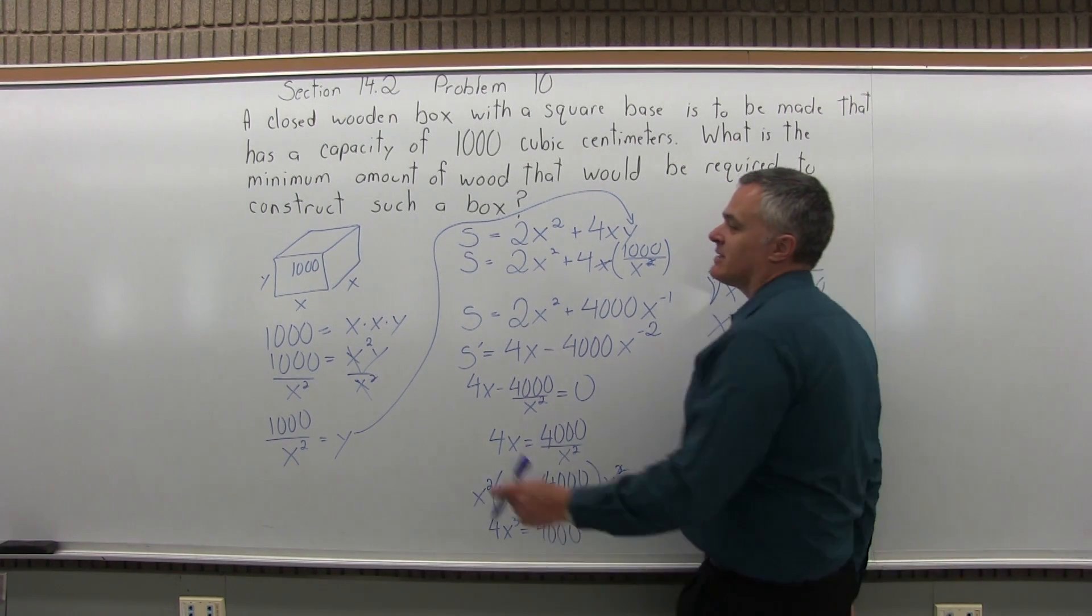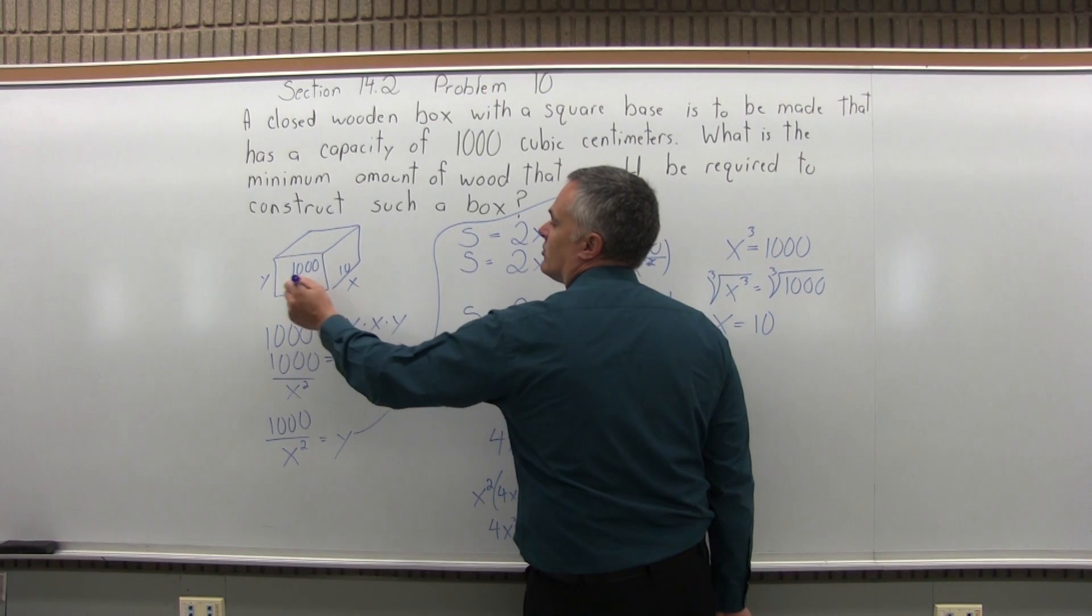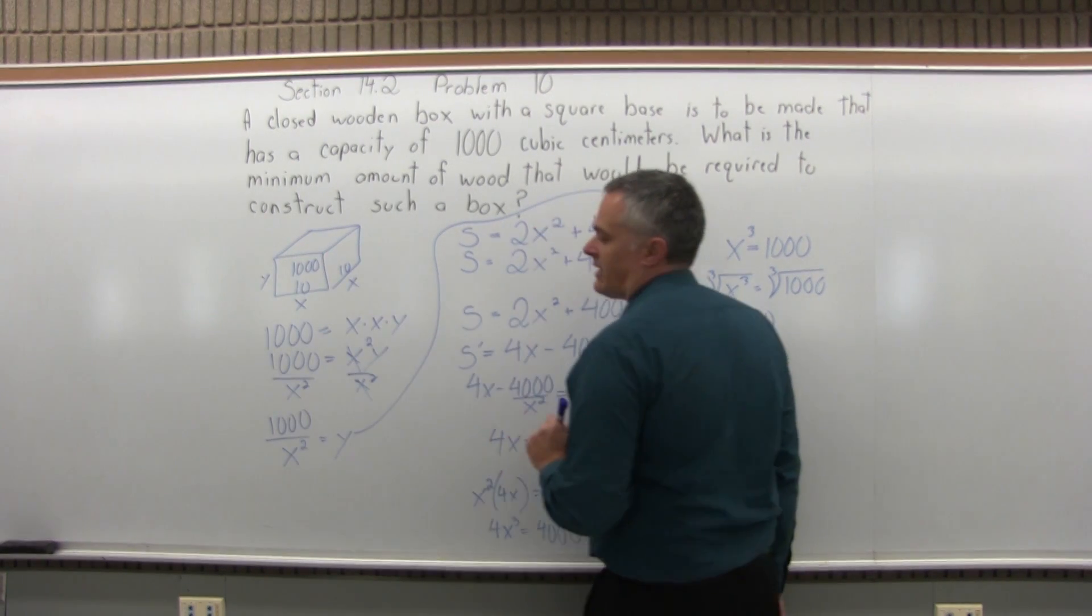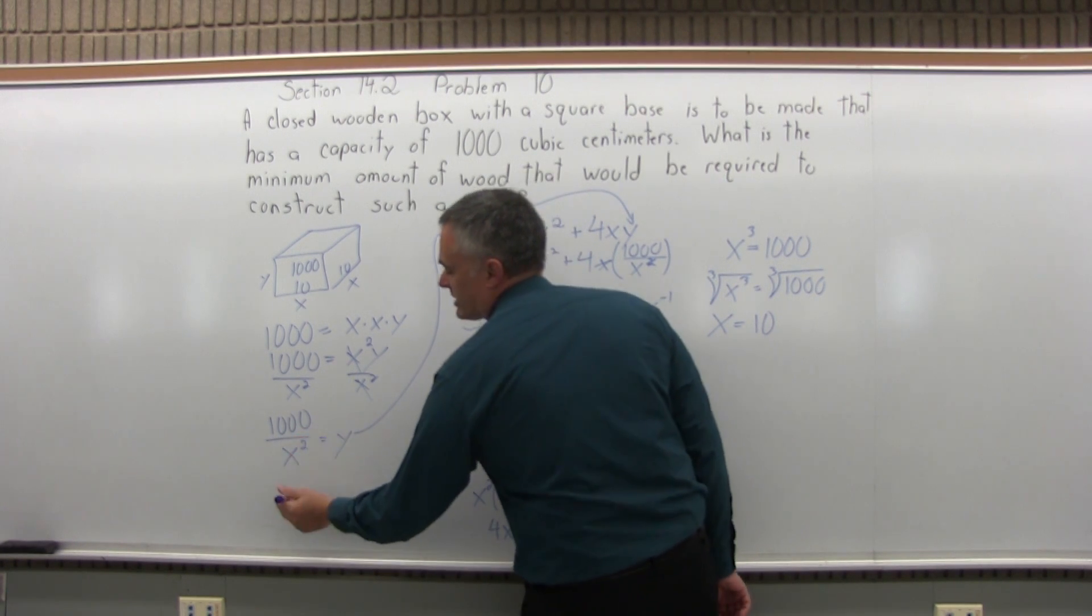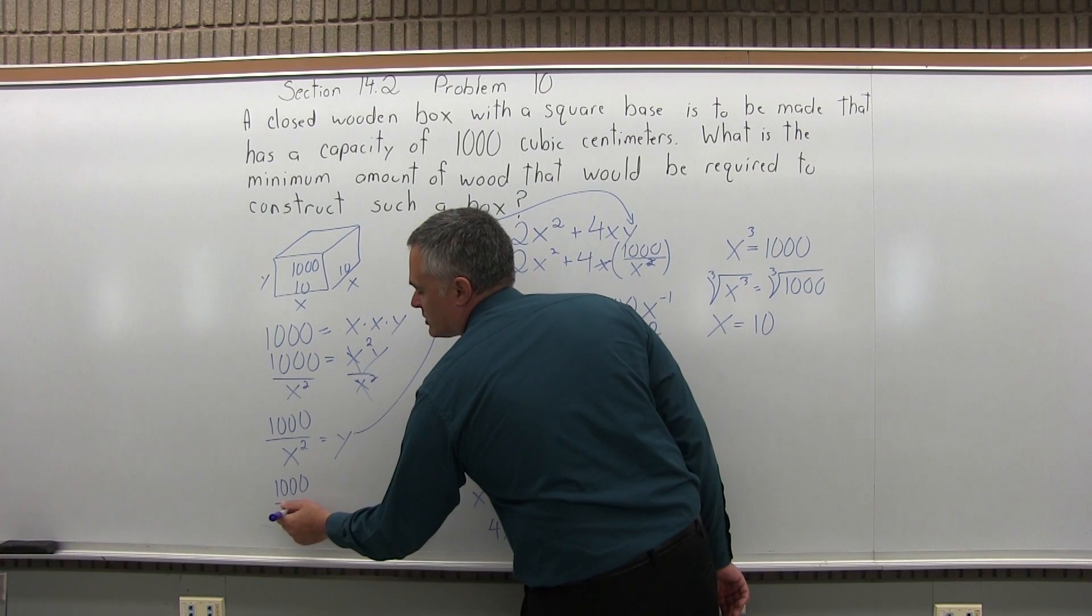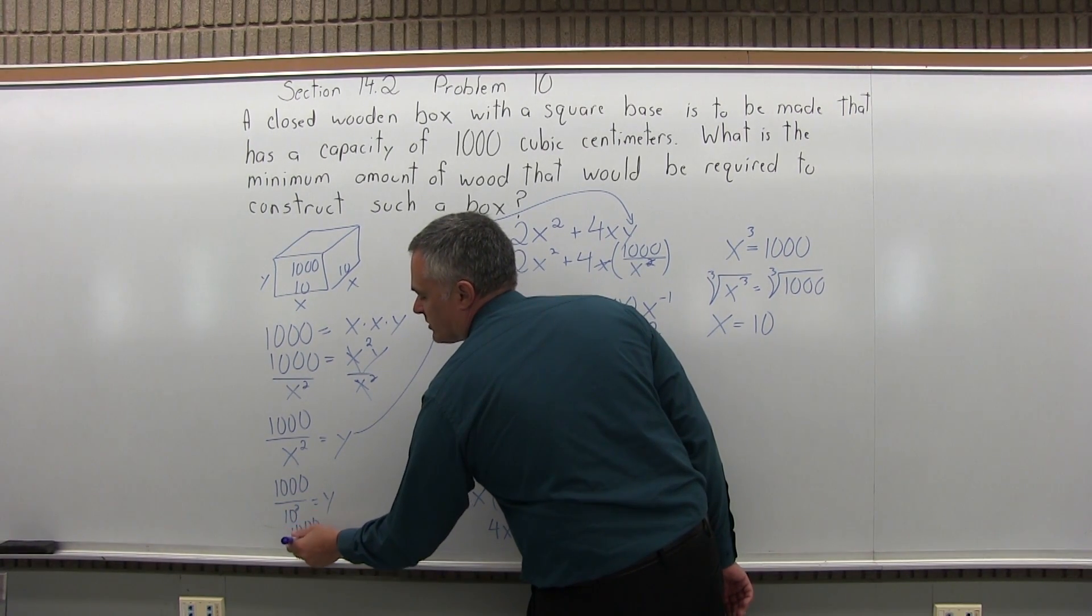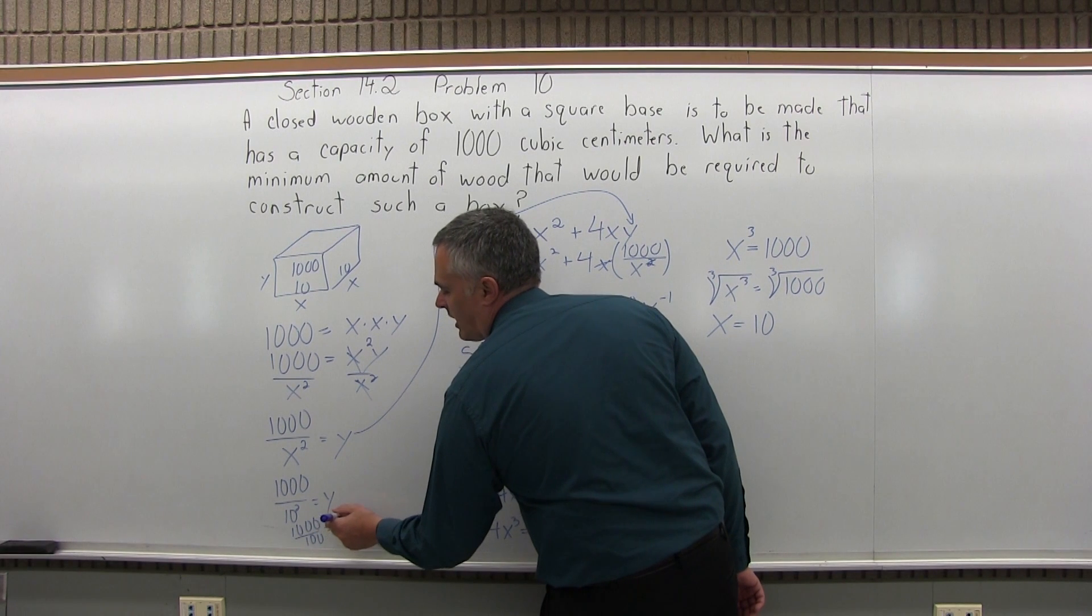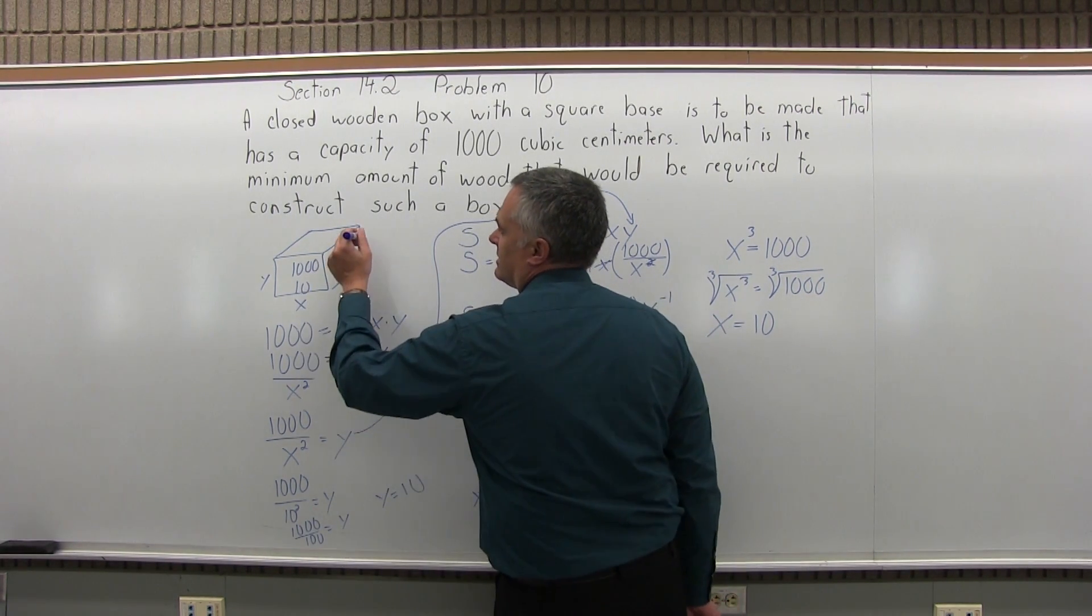So going back to my box, the base is 10 in either direction. Now how about the height? Well I have here that y equals 1,000 over x squared. So 1,000 over 10 squared is y. So 1,000 over 10 squared is 100 equals y. And 1,000 over 100, you get that the height y is also 10.